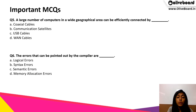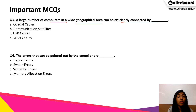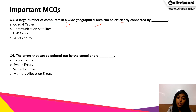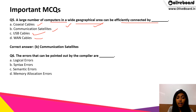A large number of computers in a wide geographical area can be efficiently connected by? Here, understand that there are a lot of computers distributed geographically with a wide distance between them. The options are coaxial cables, communication satellite, USB cables, or WAN cables. The correct answer is B — communication satellites.